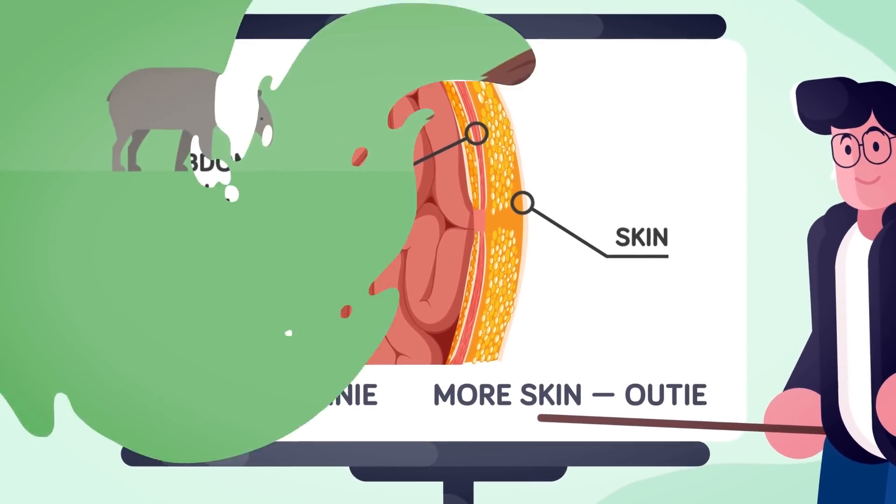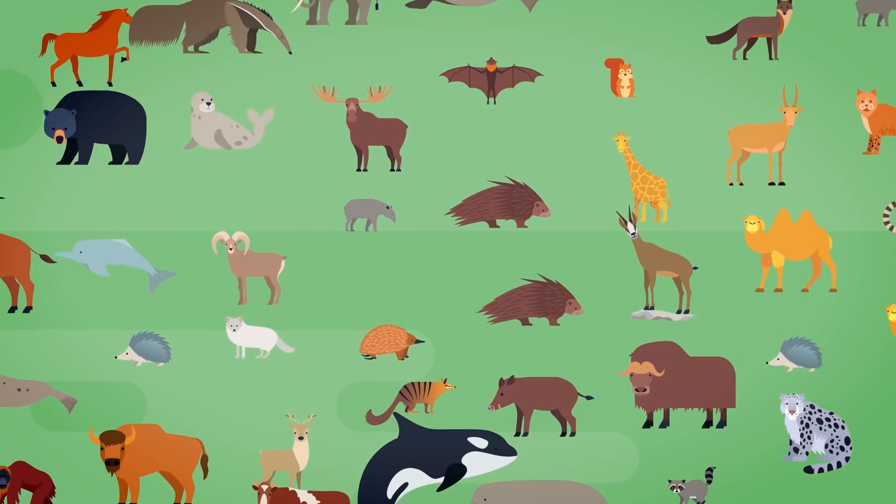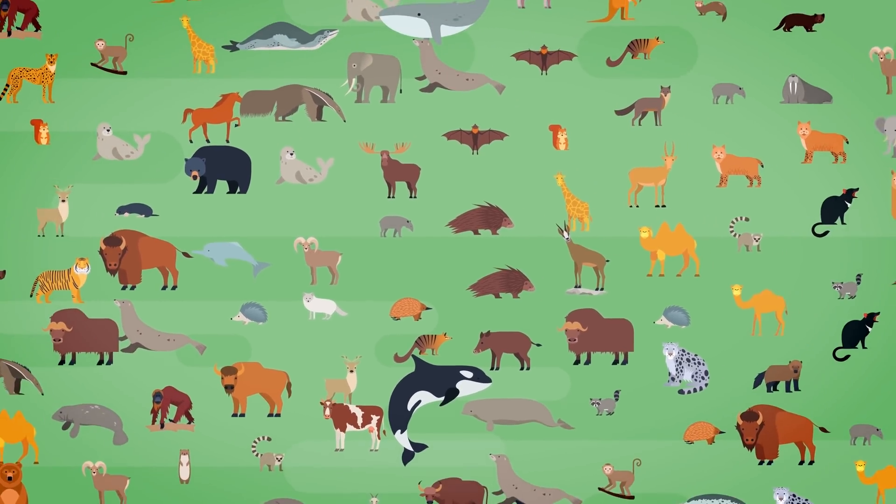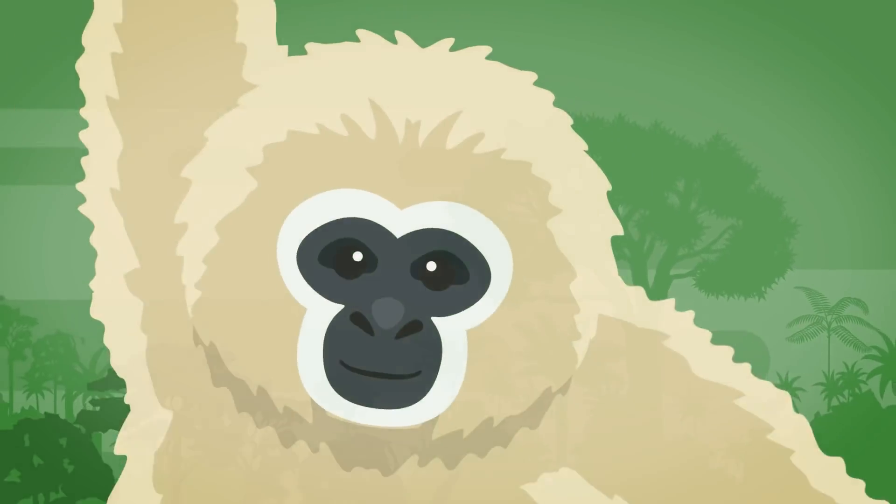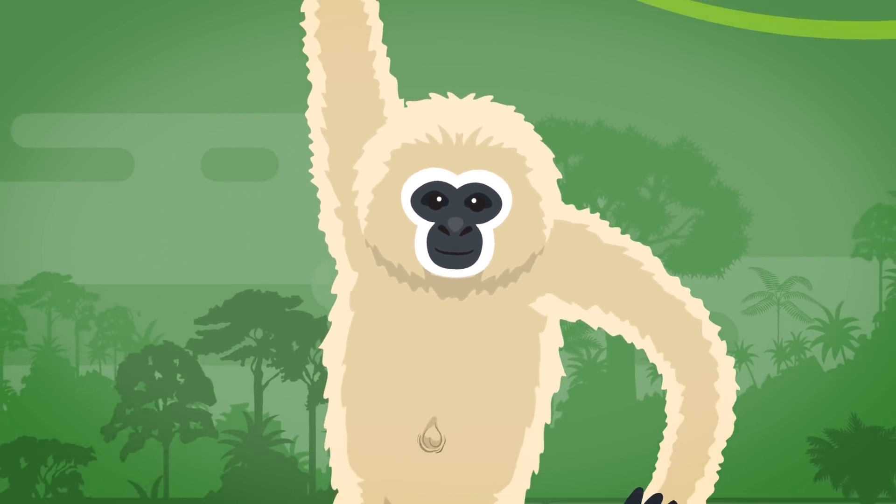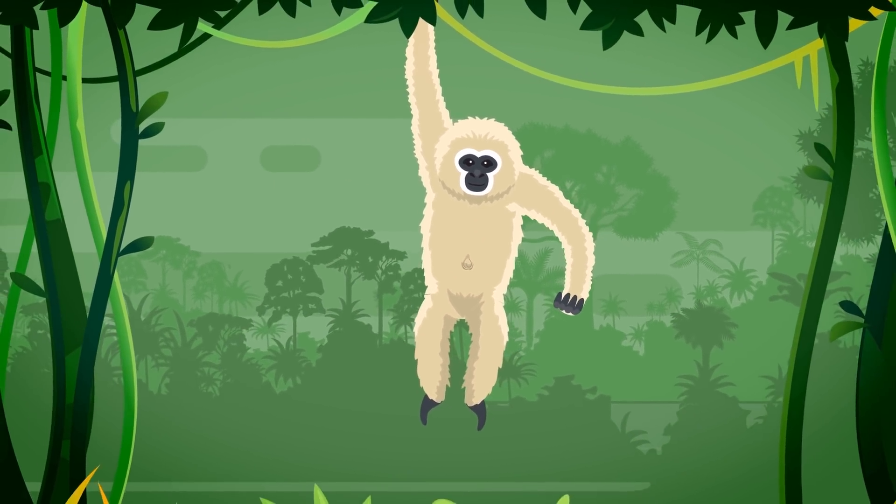Humans aren't the only animals with belly buttons. Most mammals have them, but since most animals chew off the umbilical cord themselves rather than neatly cut it and let it dry up and fall off, the resulting scar is usually much flatter and harder to see on other animals, and it tends to look more like an in-betweeny than a typical innie or outie.